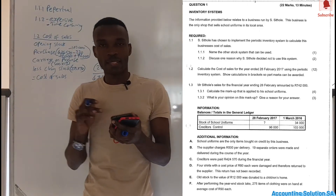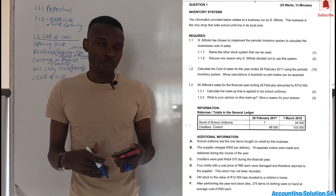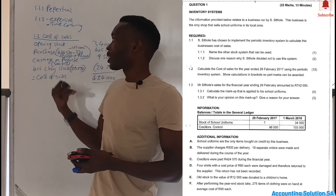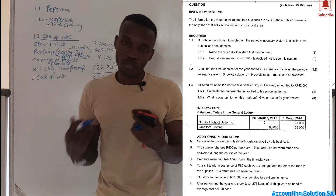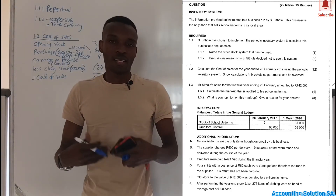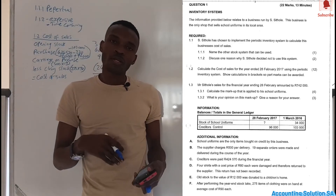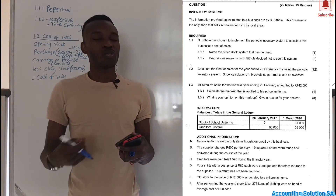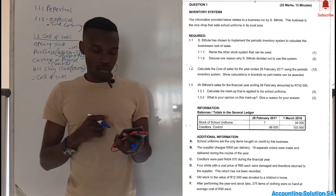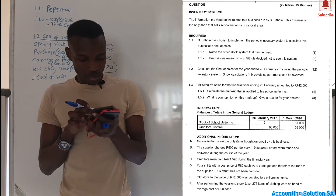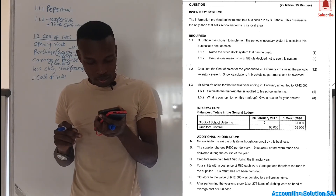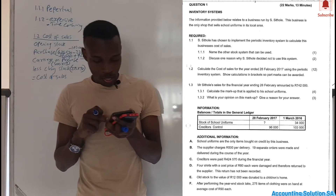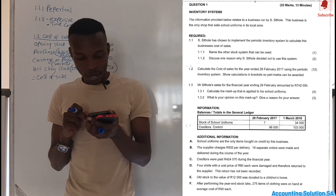If you have any questions, please comment and I'll answer immediately. Don't forget to subscribe so this channel can grow, and also like this video so that when I upload any Grade 11 video, you'll receive a notification. Now let's go to question 1.3: SC Tole's sales for the financial year ending 28 February amounted to R742,000. We need to calculate the markup applied to his school uniform.